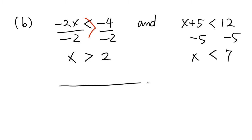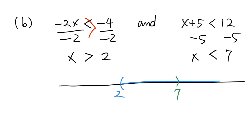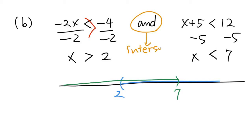Now let's draw the solutions on the number line. x greater than 2 gives the numbers on the right side of 2, and x less than 7 gives the numbers on the left-hand side of 7. Since the inequalities are connected with AND, we take the intersection of the two solution sets. The intersection is the common area of two intervals — in this case, it is the interval between 2 and 7. The numbers between 2 and 7 satisfy both inequalities, so they are the solutions. In interval notation, we write it as (2, 7).